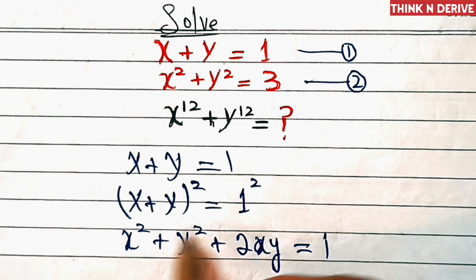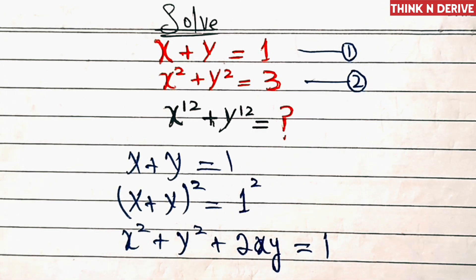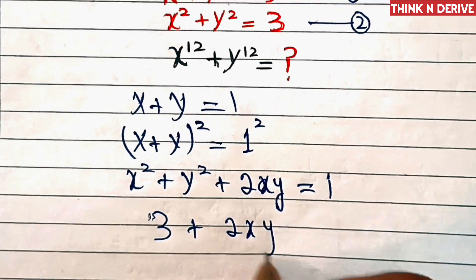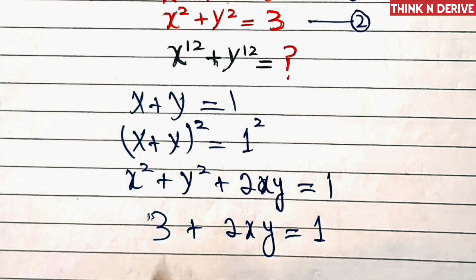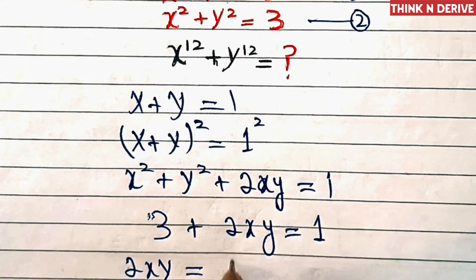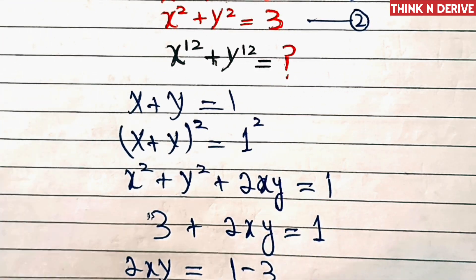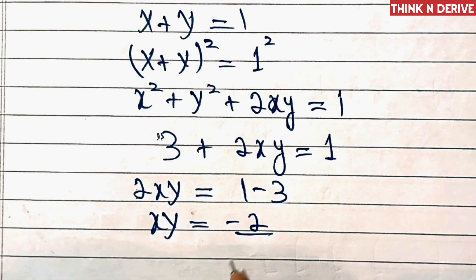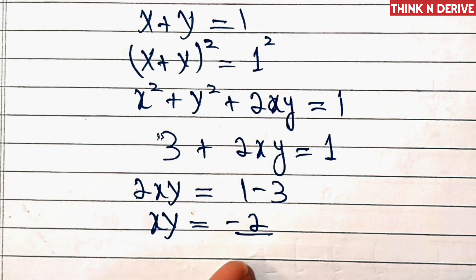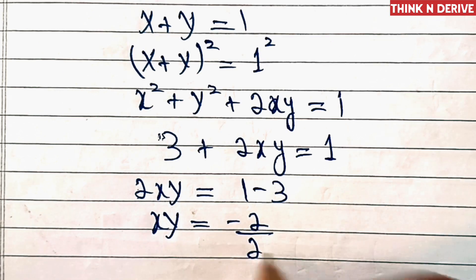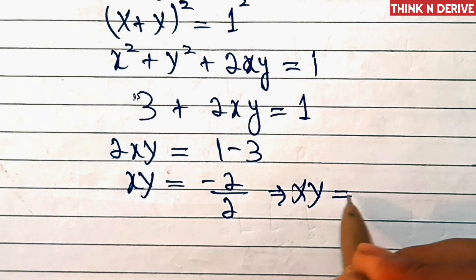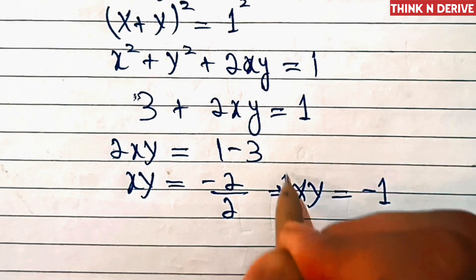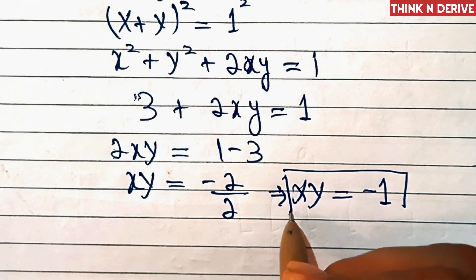From equation 2, we have x squared plus y squared equal to 3. So 3 plus 2xy equals 1, which means 2xy equals 1 minus 3 equals minus 2. Dividing by 2, xy equals minus 1. So this is the value of x times y.